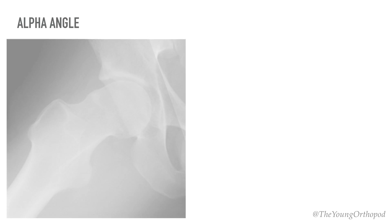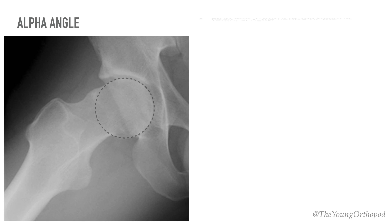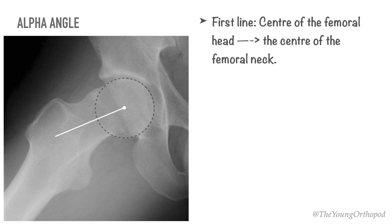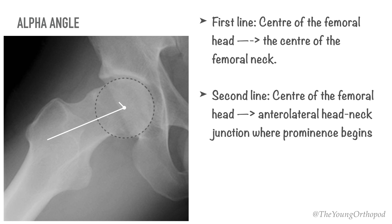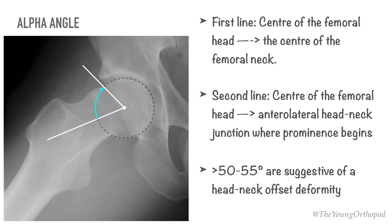The alpha angle is measured on a lateral radiograph. A line is drawn connecting the center of the femoral head and the center of the femoral neck. A second line is drawn from the center of the femoral head to the point on the anterolateral head-neck junction where the prominence begins. The intersection of these two lines forms the alpha angle. The normal value is approximately 42 degrees, and an alpha angle of more than 50 to 55 degrees is generally considered consistent with a cam deformity.